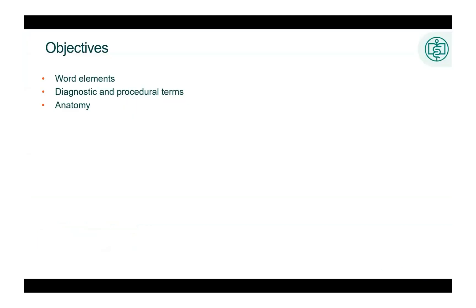In this chapter, we're going to review word elements, such as combining forms, prefixes, and suffixes, looking at some diagnostic and procedural terms that interpret their meaning, and understand anatomy as it relates to coding. This is a review of anatomy and medical terms you should already know. This is not meant to replace a comprehensive course in medical terminology or anatomy, and I highly recommend that if you haven't already had that course, that you would take a complete course in that as well.